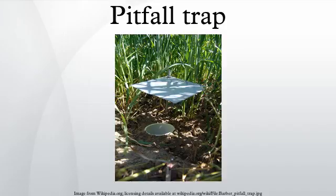The fluids that can be used in these traps include formalin, methylated spirits, alcohol, ethylene glycol, trisodium phosphate, picric acid, or even plain water. A little detergent is usually added to break the surface tension of the liquid to promote quick drowning. The opening is usually covered by a sloped stone, lid, or some other object. This is done to reduce the amount of rain and debris entering the trap, and to prevent animals in dry traps from drowning or overheating, as well as to keep out predators.